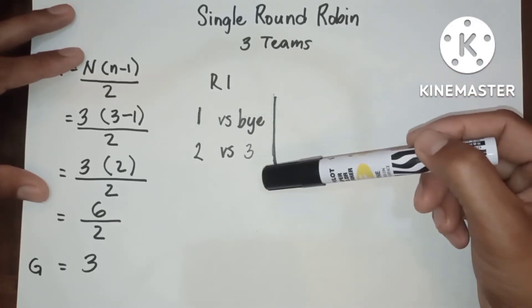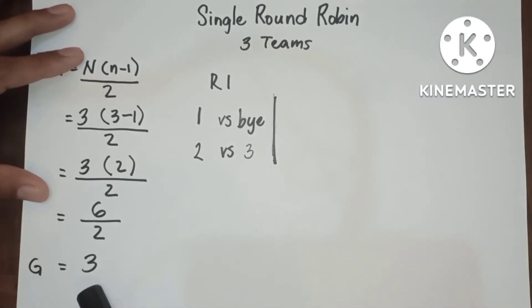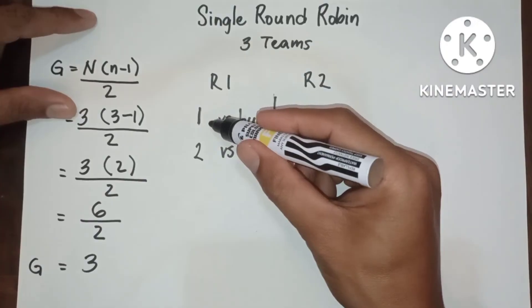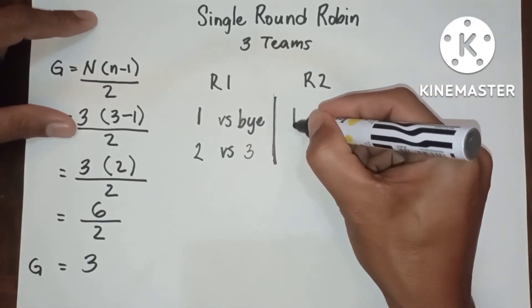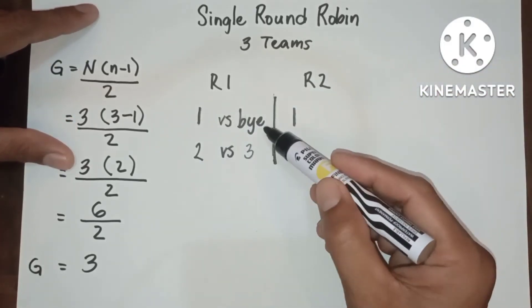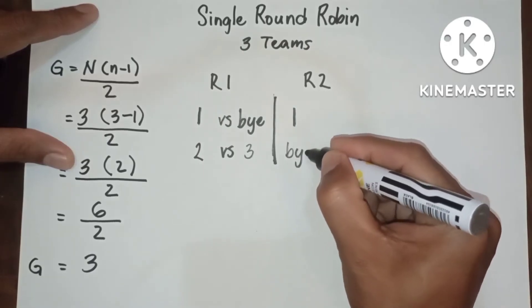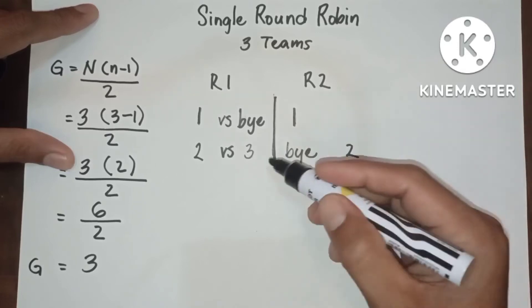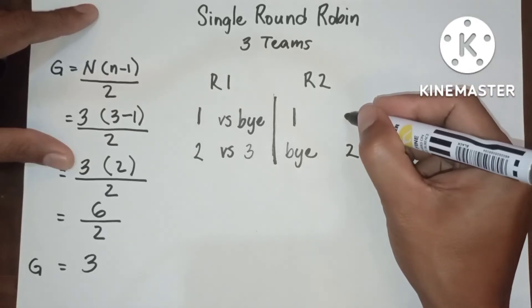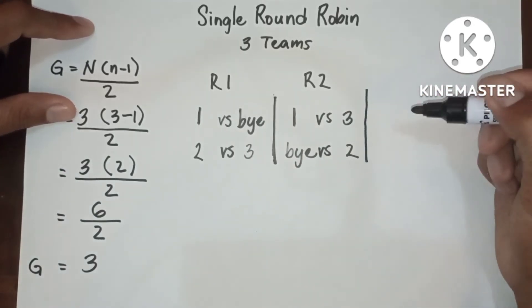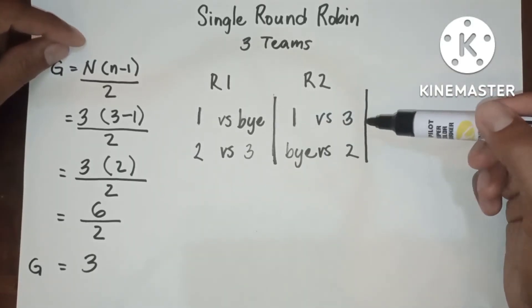Since we finished round 1 and we only have 3 games total, it is expected that we can only create up to round 3. Now, let's proceed to round 2. Number 1 will remain in position, and all the other teams will rotate counterclockwise. The bye will be placed here, and 2 will be placed here, and 3 will be placed up here. This will be round 2, 1 versus 3.